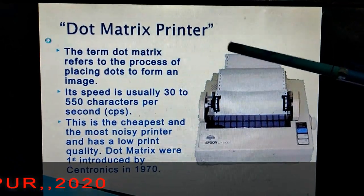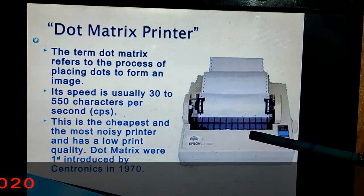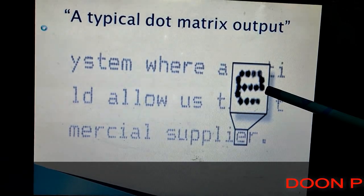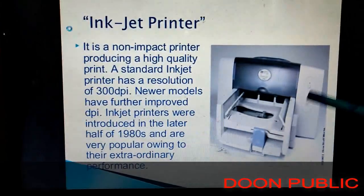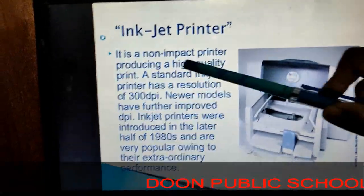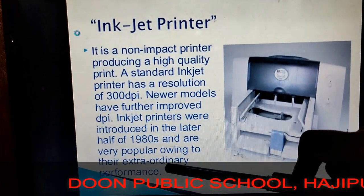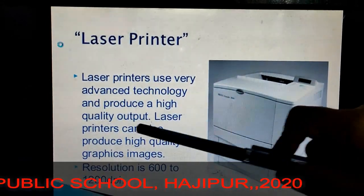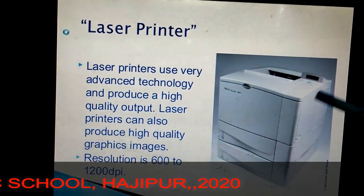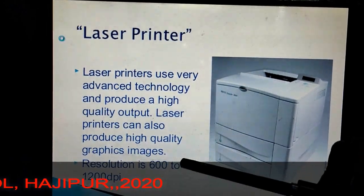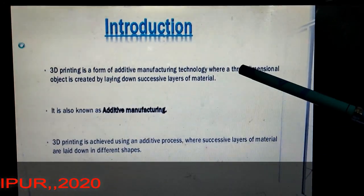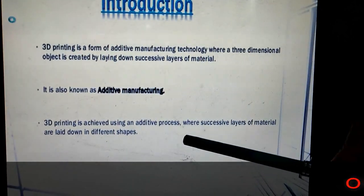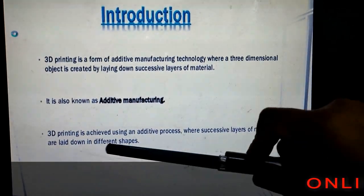Next are the types of printers. First is the dot matrix printer, which refers to the process of placing dots to form an image. Next is the inkjet printer — a non-impact printer which provides high quality print and extraordinary performance. Next is the laser printer, which uses advanced technology to produce high quality output and high quality graphics images. Next is 3D printing — a manufacturing technology to produce three-dimensional objects by laying down successive layers of material in different shapes.